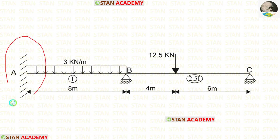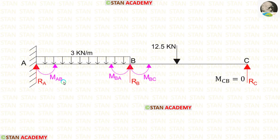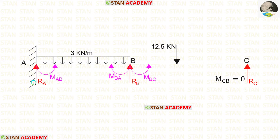At point A, there is a fixed support. At points B and C, there are roller supports. In this beam, we have to find three moments: MAB, MBA, and MBC. Also, we have to find three reactions: RA, RB, and RC.